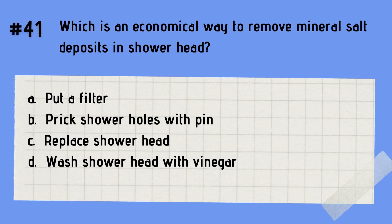Question 41: Which is an economical way to remove mineral salt deposits in a showerhead? A. Put a filter. B. Prick shower holes with a pin. C. Replace showerhead. D. Wash showerhead with vinegar. The answer is B — prick shower holes with a pin. Remember that an economical way to remove mineral salt deposits in a shower is by pricking the shower holes using a pin.